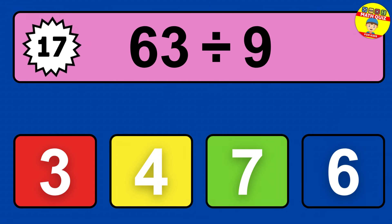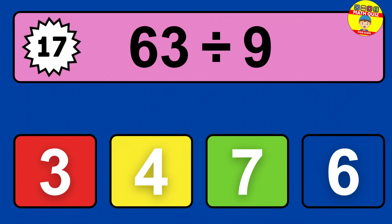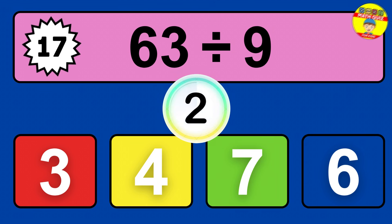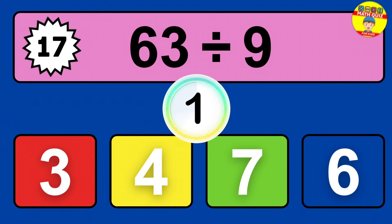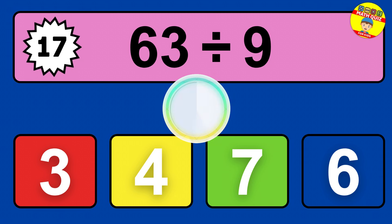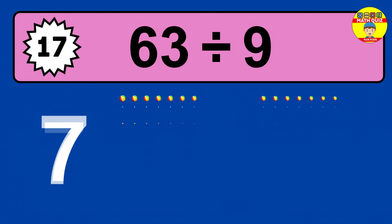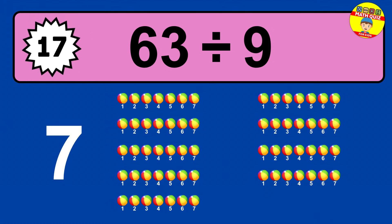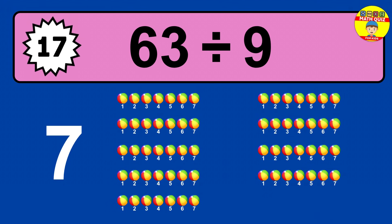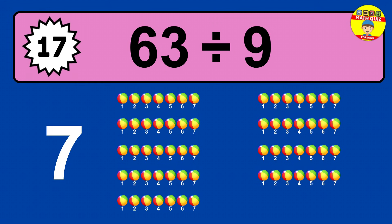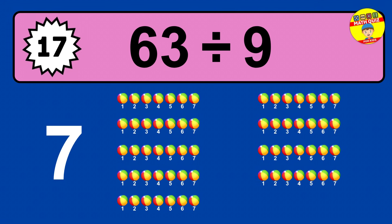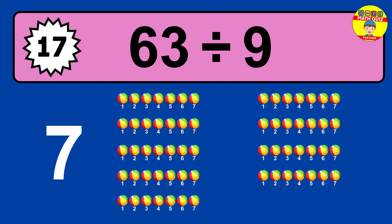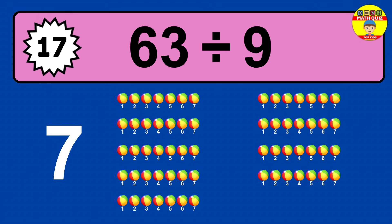63 divided by 9 — time to think. Let's go to the solution. Divide the number 63 by 9. Each group contains 9 units, so dividing 63 by 9 results in 7 equal groups. Thus, the result is 63 divided by 9 equals 7.